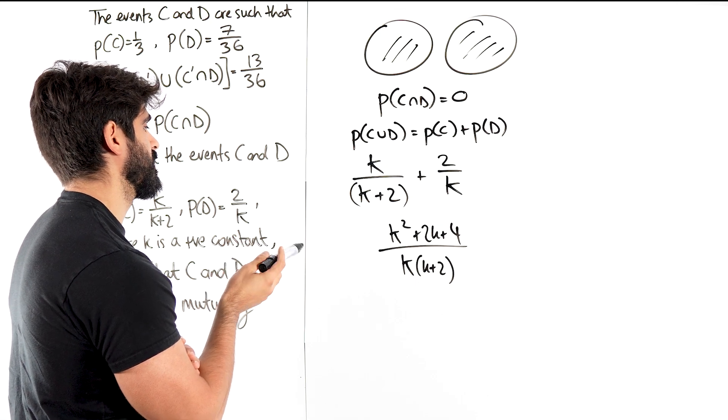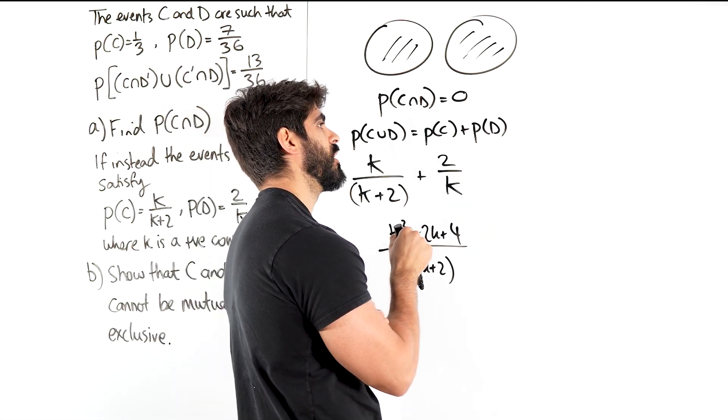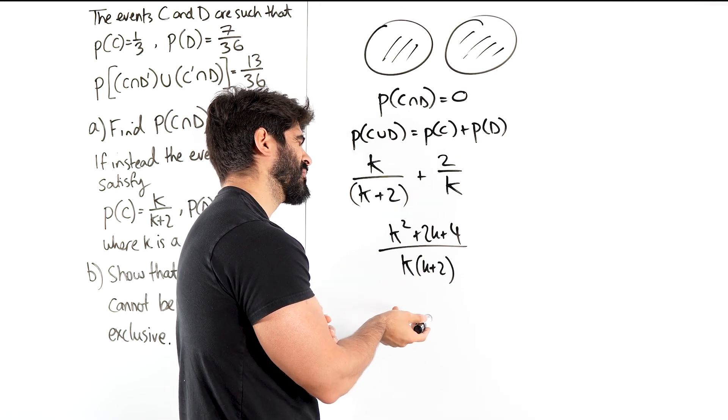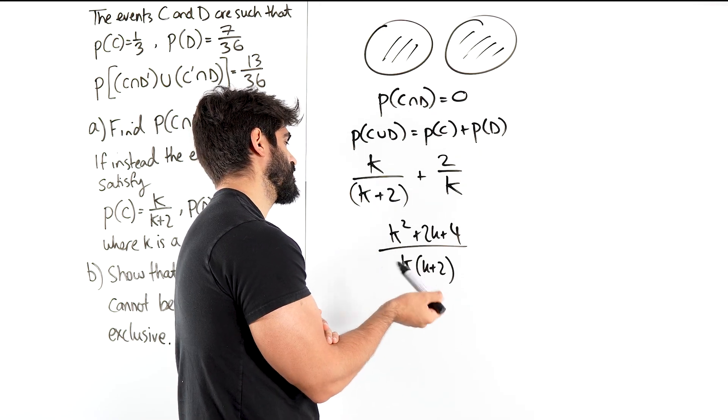I mean, I can't factorize it. Can I complete the square? Sure. But is completing the square going to help because I'm going to get a K plus 1 squared and then like plus 3 or something? How is that going to help me? I don't think so. Ideally, something would have cancelled here, but it doesn't.